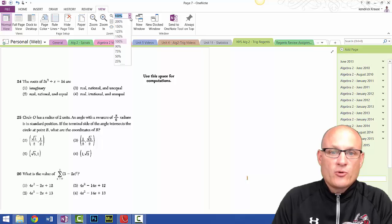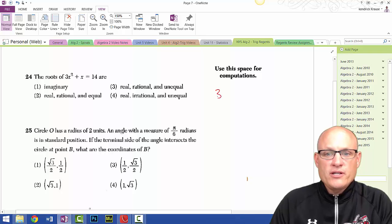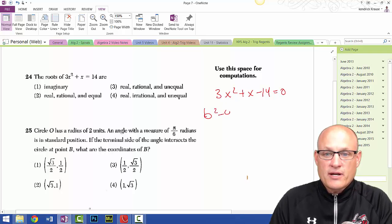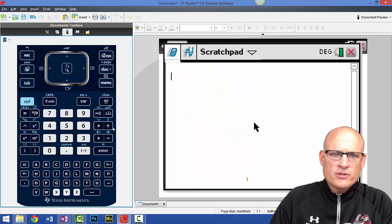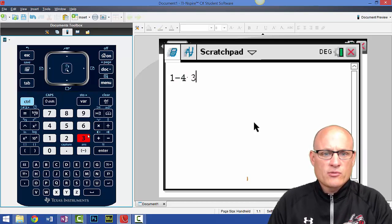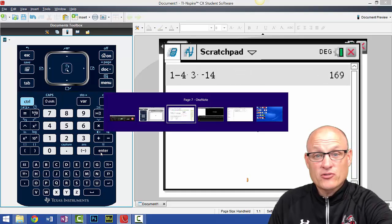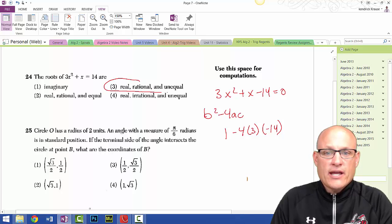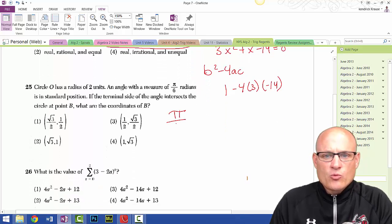Question 24: The roots are 3x squared plus x minus 14 equals 0. We've got to find the discriminant. The discriminant is b squared minus 4ac. So that's 1 squared or 1 minus 4 times 3 times negative 14. Let's do that. 1 minus 4 times 3 times negative 14. That's 169. That's a perfect square. And since that's a perfect square, they have to be real and rational.